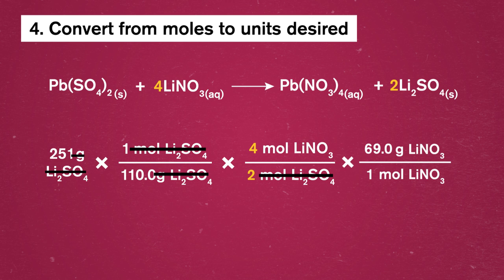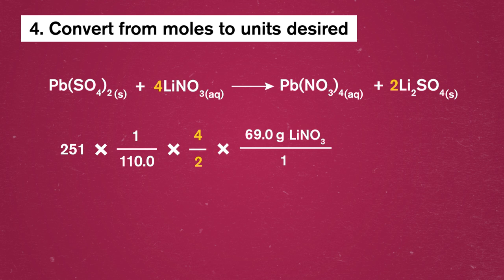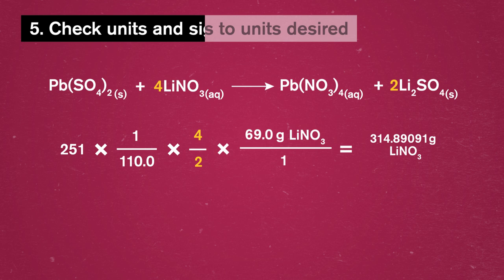You can tackle the math in each of these steps, one at a time, or wait to write it all out in one equation, like we've done here. When we multiply across and cancel our units, we end up with 314.89091 grams of lithium nitrate.